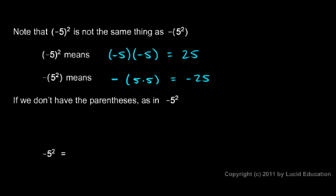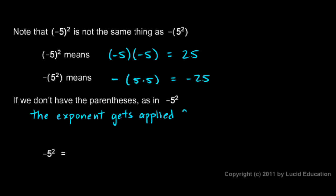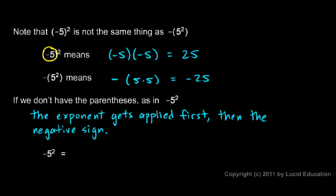So, if we don't have parentheses — such as negative 5 squared — which one is it? Is it (-5)² or -(5²)? It turns out it's this one: the exponent gets applied first, then the negative sign. If you don't have parentheses, the exponent gets applied first, then the negative sign. If you do have parentheses, the parentheses dictate the order — the thing in parentheses always gets done first. So in that case, the negative sign gets applied first, and then that thing is squared; in the other case, the squaring is done first, and then the negative sign.